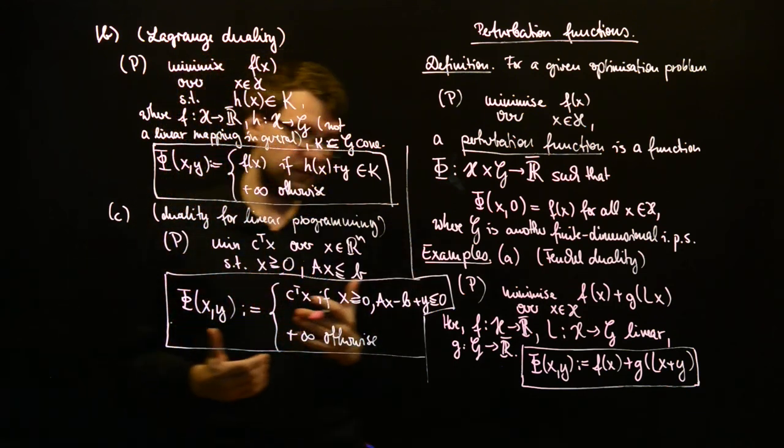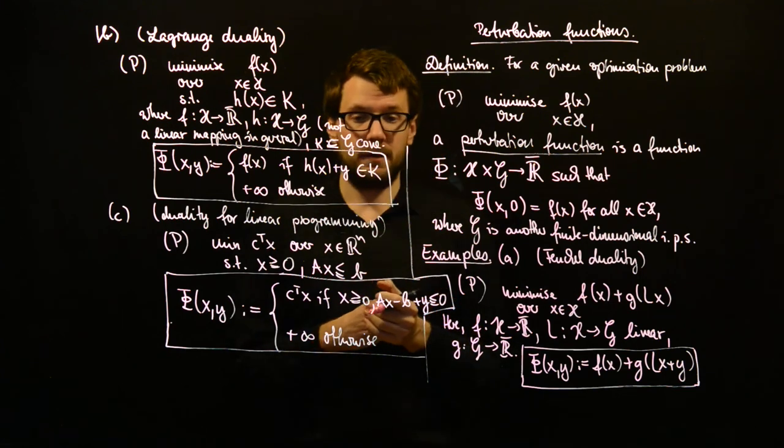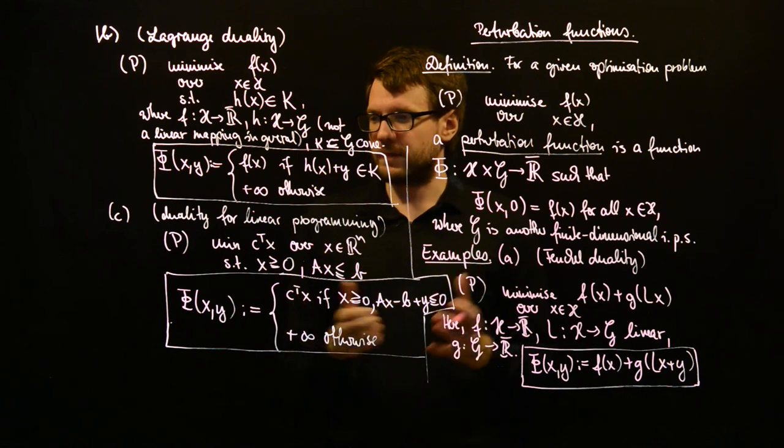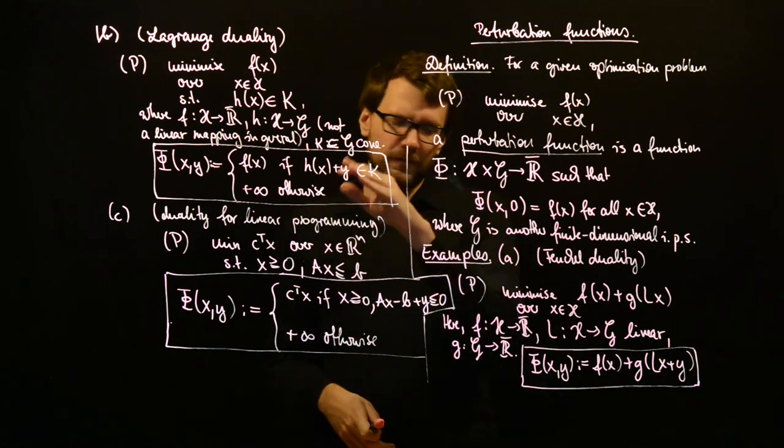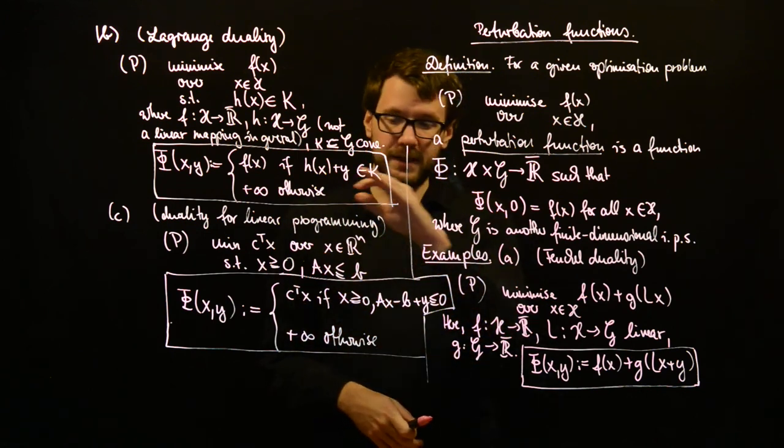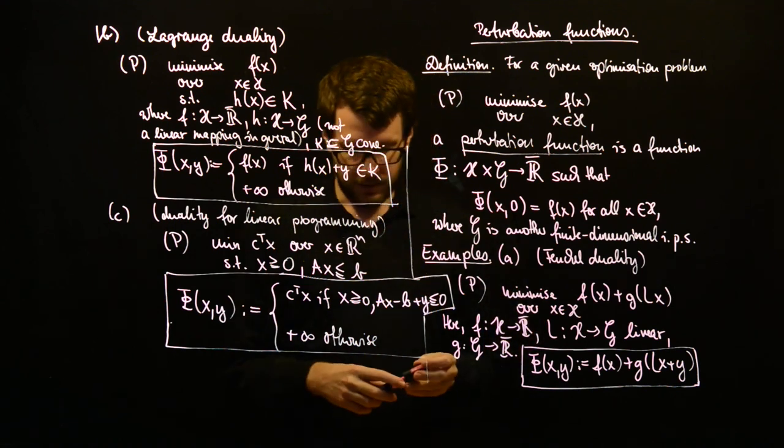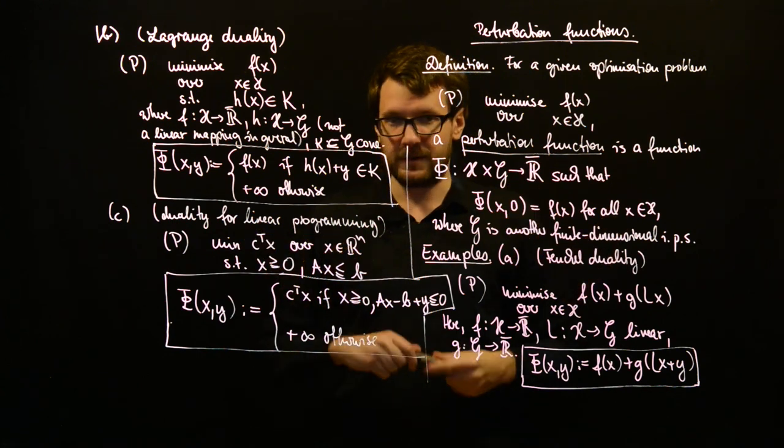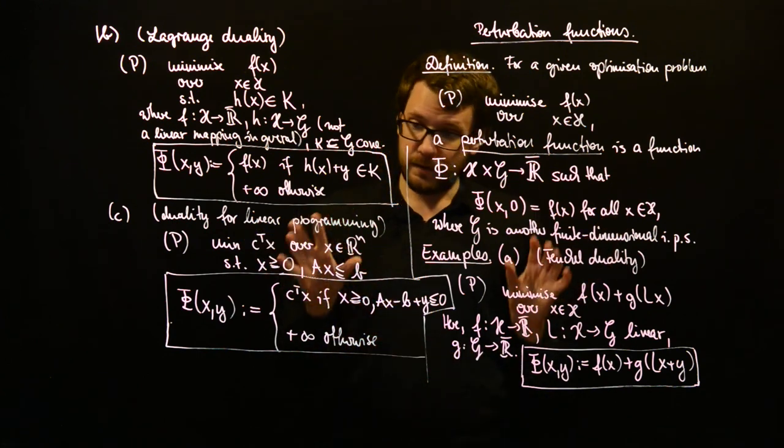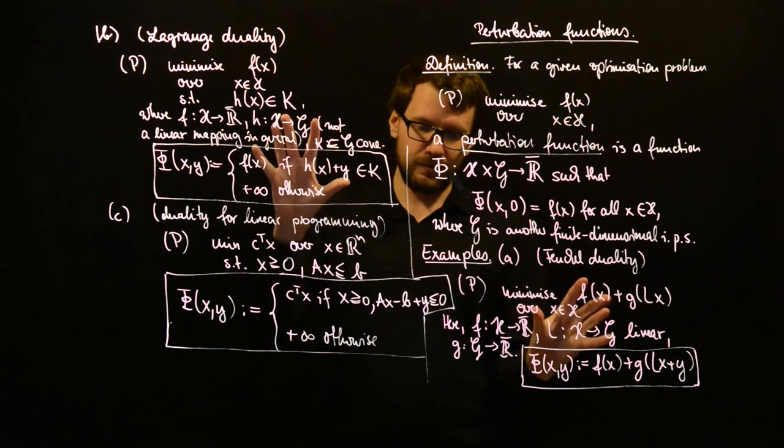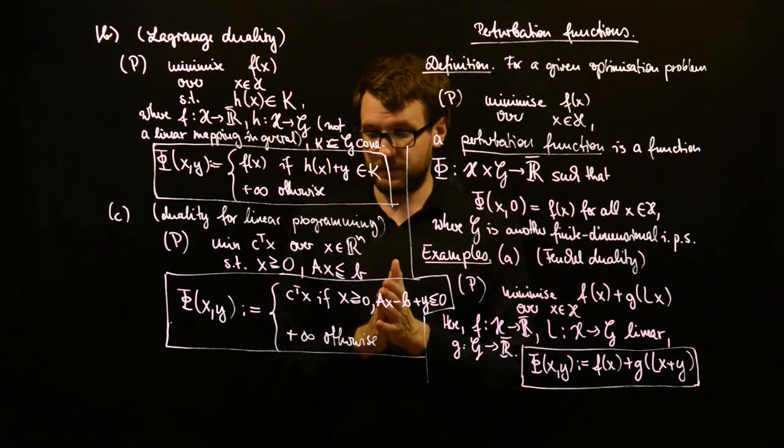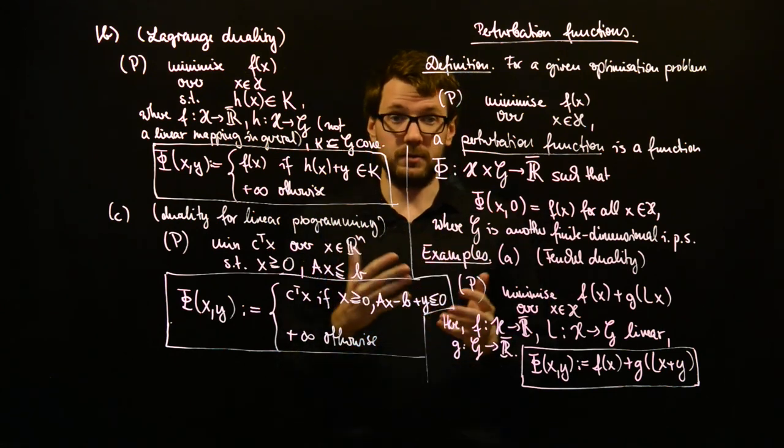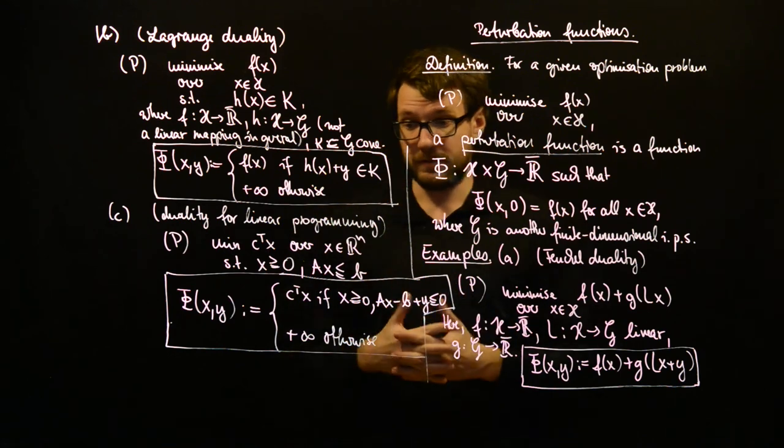So now we have seen three different ways to construct a perturbation function for convex optimization problems. And, of course, there are ways to combine these. There are ways to get special perturbation functions for special problems. But these two and the specialization of one of them, these are very basic cases I want you to know about and I want you to deal with.